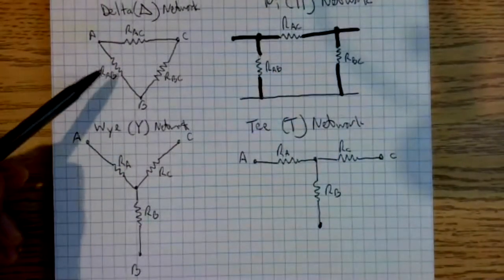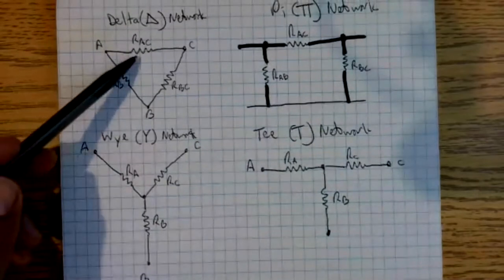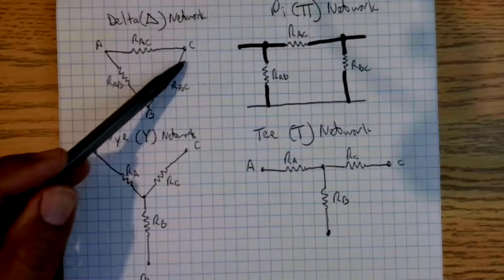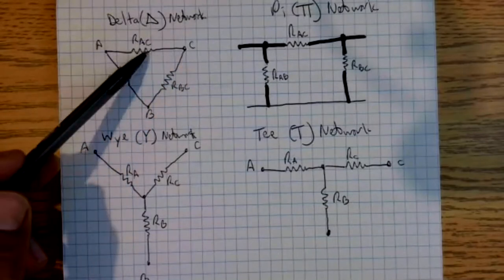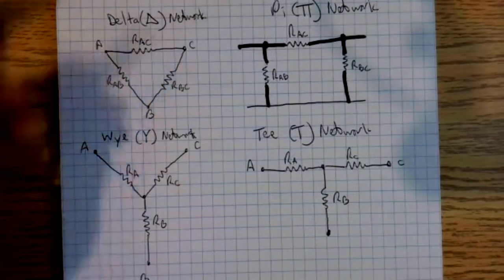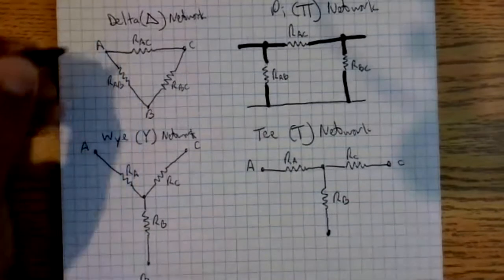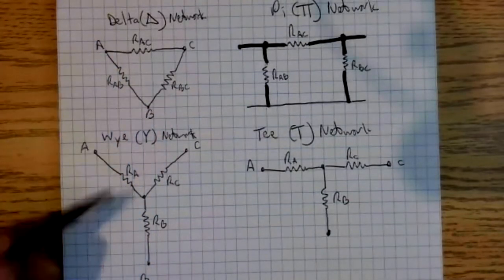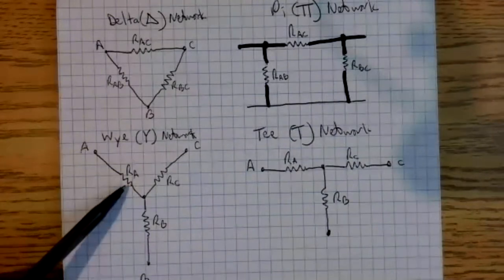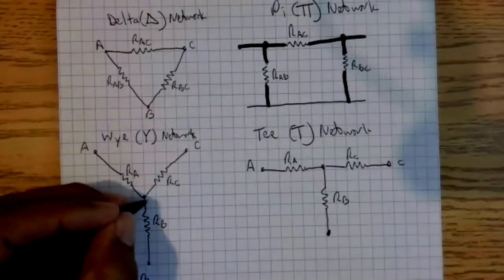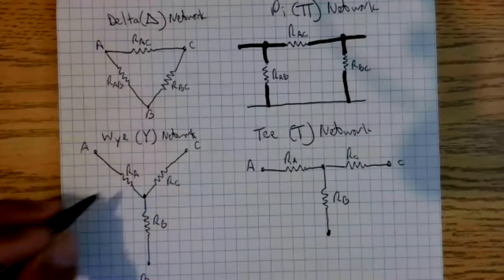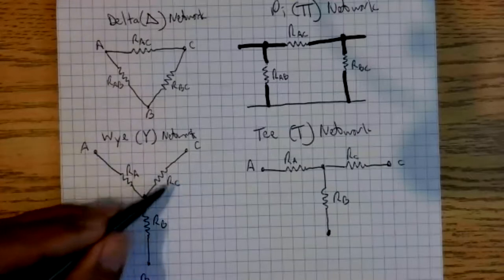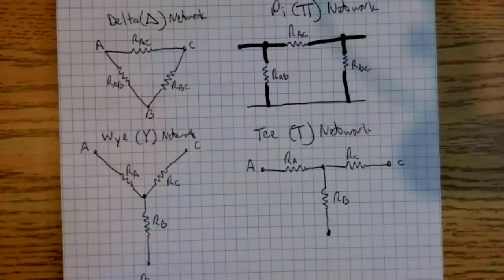In a delta configuration, the resistors are denoted by the two terminals they're connected to — so R_ac means it's between a and c, and we have R_ab and R_bc. In a Y network, the resistors are denoted by a single letter subscript according to the terminal they're connected to: R_a, R_b, and R_c.